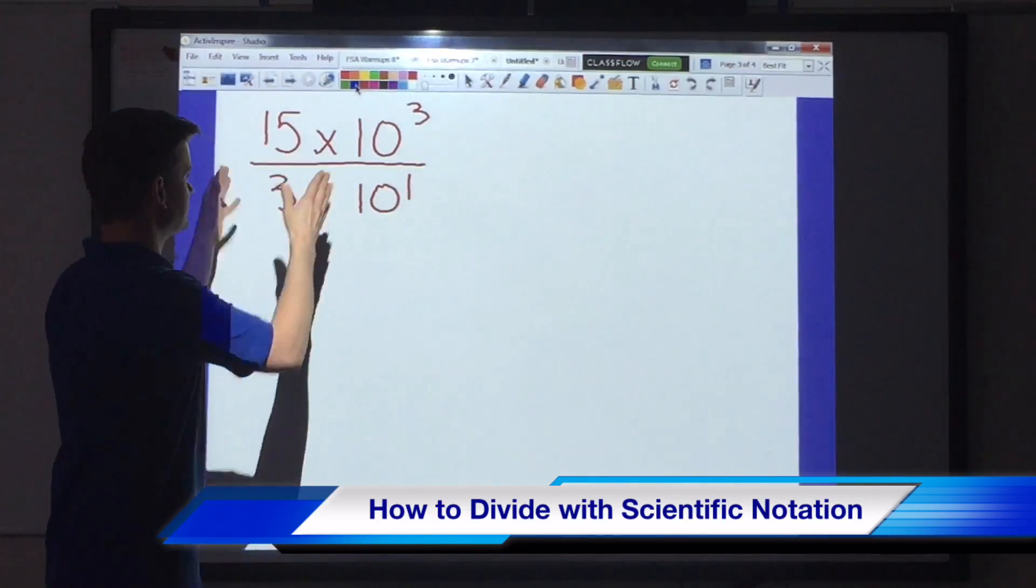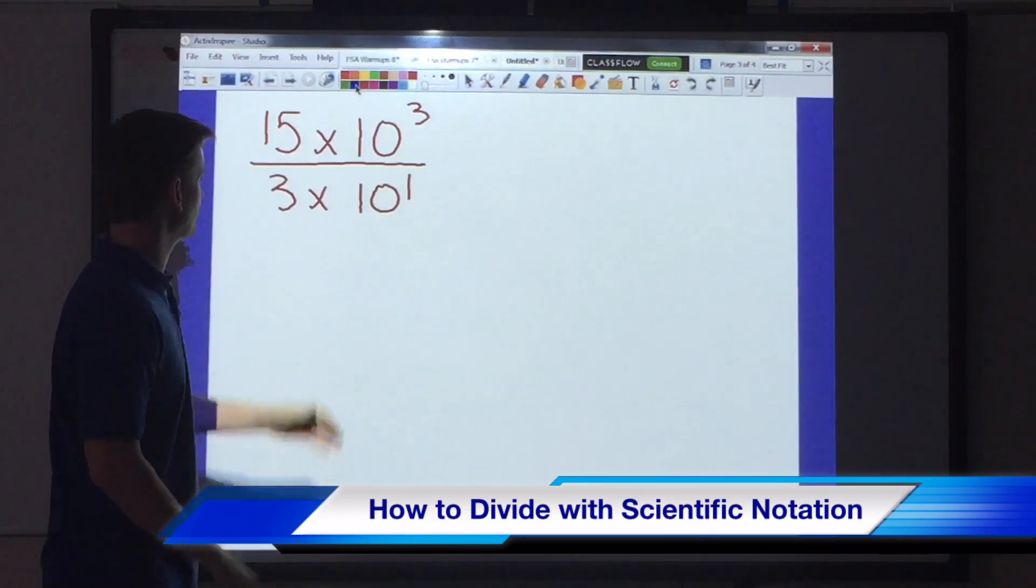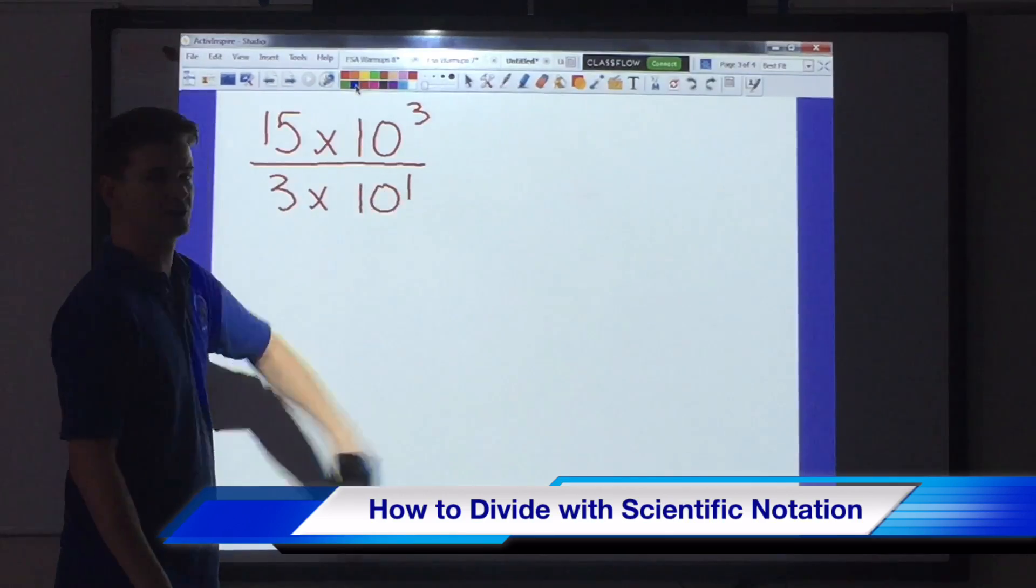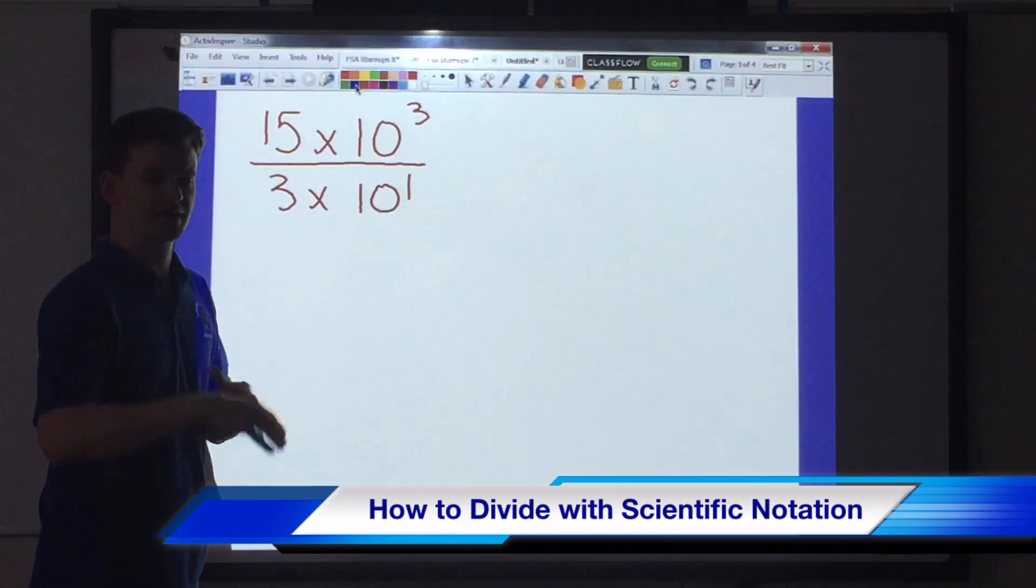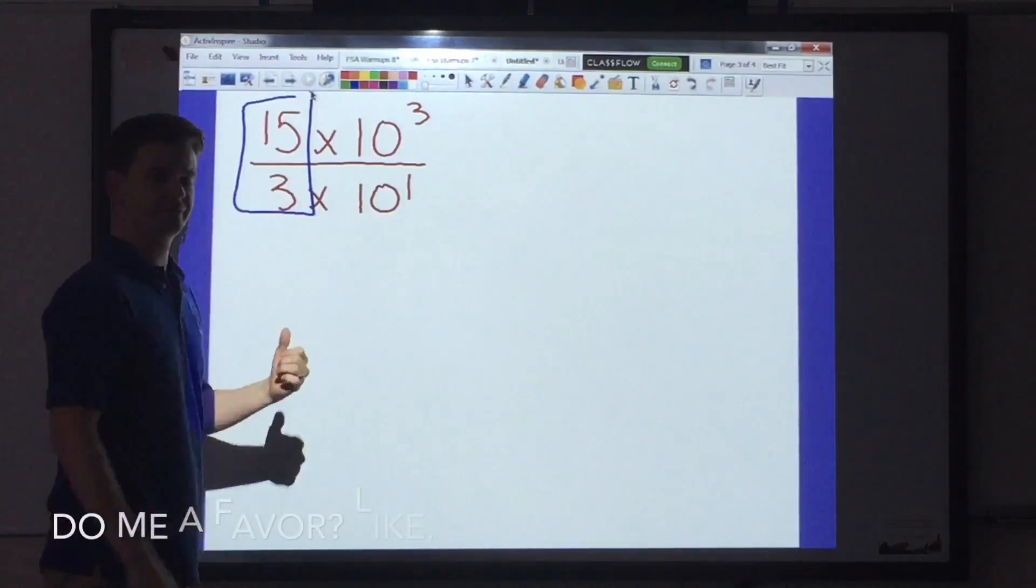We're presented with a standard division using scientific notation problem here. We have 15 times 10 to the third divided by 3 times 10 to the first power. Now the first step here is you want to divide your factors.